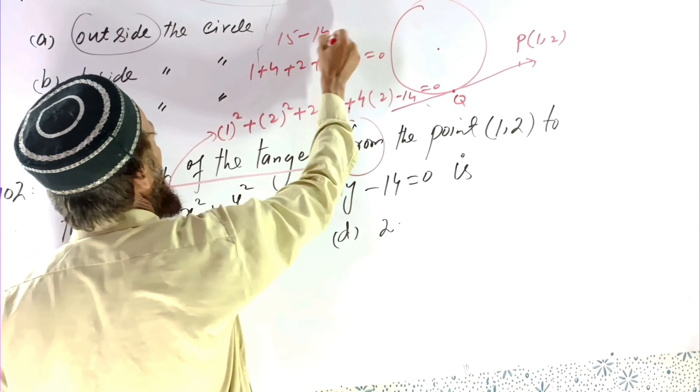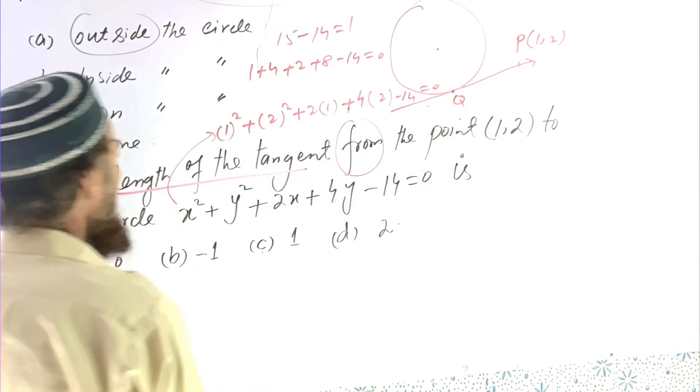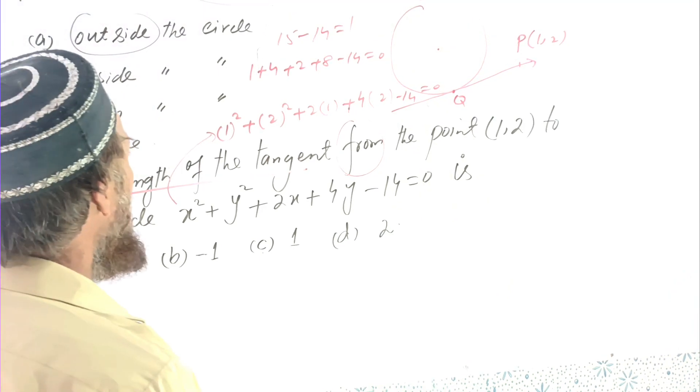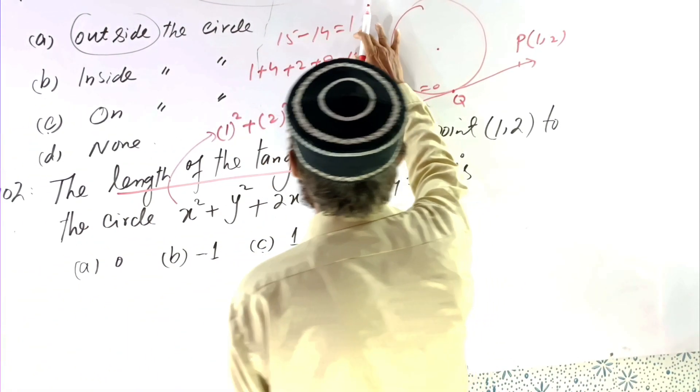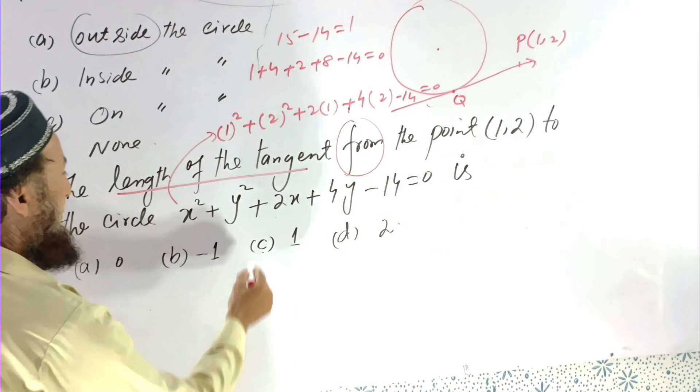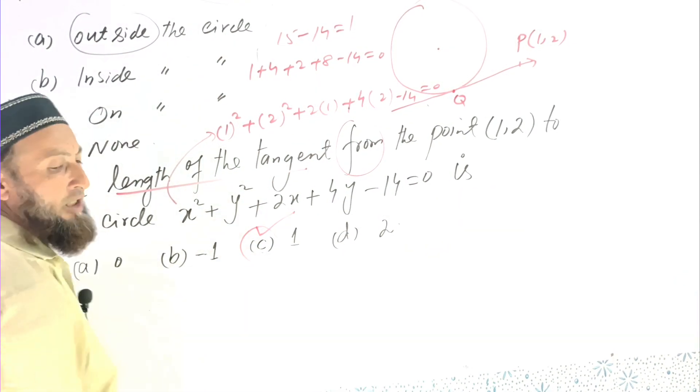15 minus 14 is equal to 1. So the result will be equal to 1, and the result will be equal to here 1. Option C is the correct option.